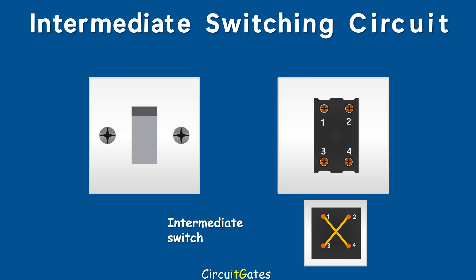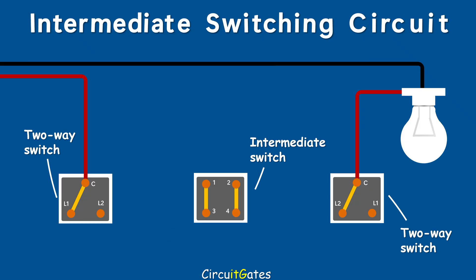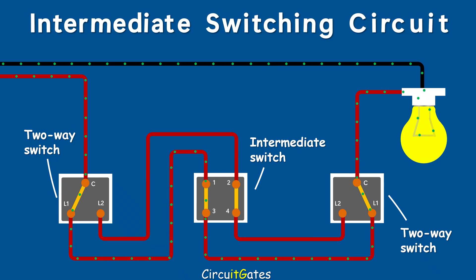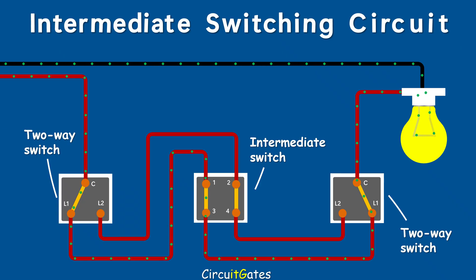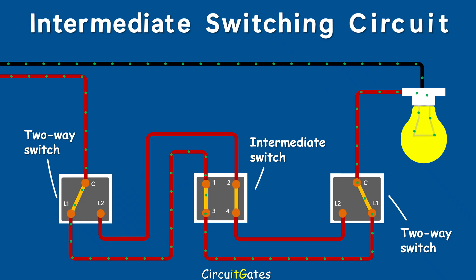To wire an intermediate switching circuit, we simply add an intermediate switch between the two two-way switches. Connect the terminals labeled L1 of the two-way switches to the terminals labeled 1 and 3 of the intermediate switch, and the terminals labeled L2 of the two-way switches to terminals labeled 2 and 4 of the intermediate switch. In an intermediate switching circuit, for the lamp to be illuminated, one path must be complete — starting from the common terminal of the first switch, going through the intermediate switch, up to the common terminal of the other two-way switch. If there is not a complete path, the lamp will not be illuminated.